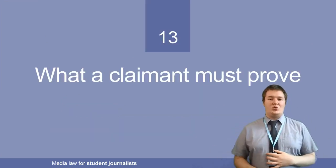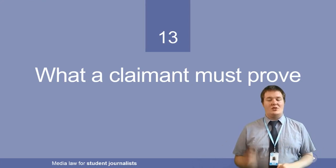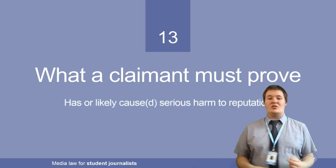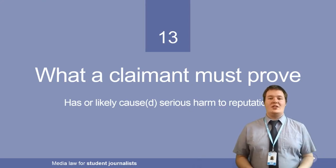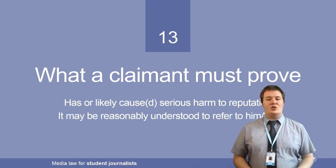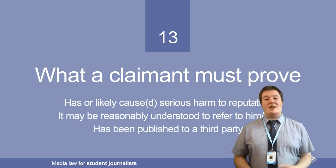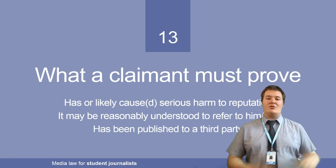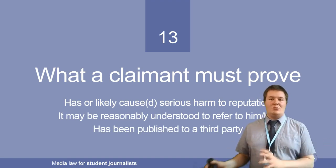What a claimant must prove — if someone wants to sue you for defamation, they must prove that it has or has likely caused serious harm to their reputation, it must be reasonably understood to refer to them, and it has been published by a third party. This comes back to the idea of defamation, identification, and publication.